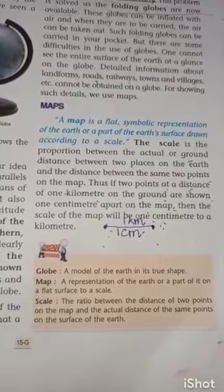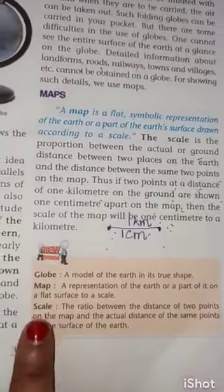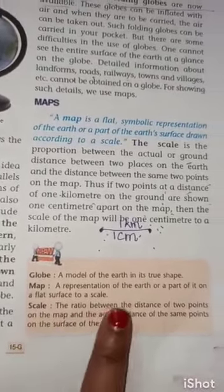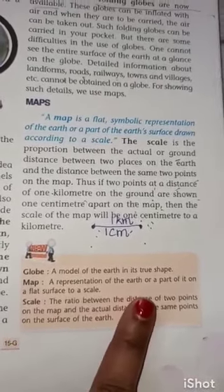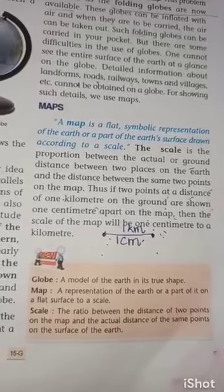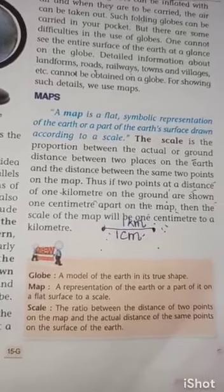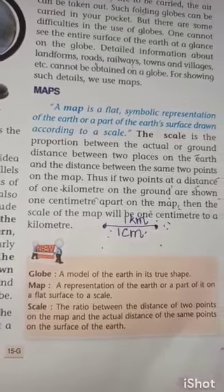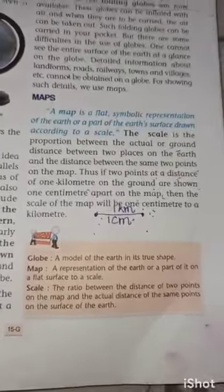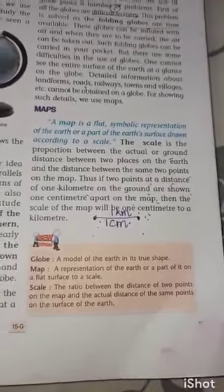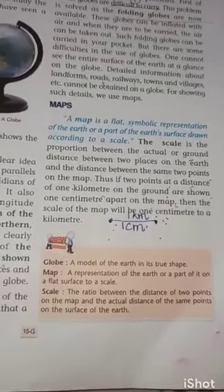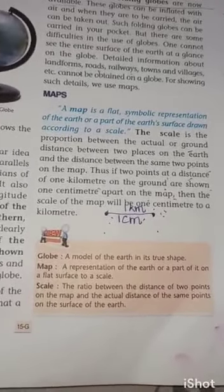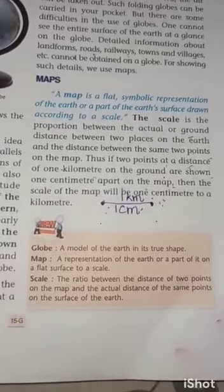Now, map: a map is a representation of the earth or part of it on a flat surface, drawn to a scale. It is drawn to a scale because all distances are measured according to that scale — comparing actual distance on the ground to distance on the map.